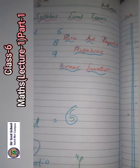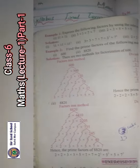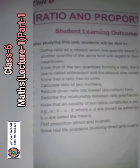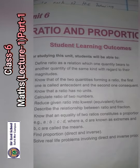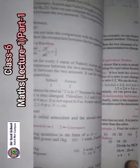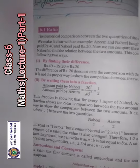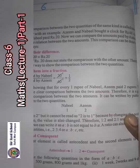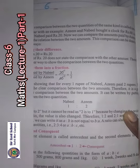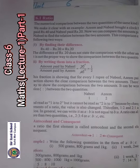Now we start today's lecture. Open page number 65, which is Ratio and Proportion, Unit 6. We start from its introduction. The numerical comparison between two quantities of the same kind is called a ratio.